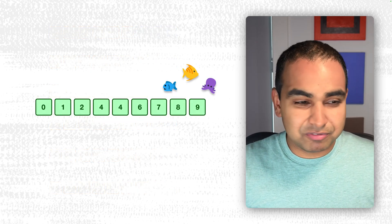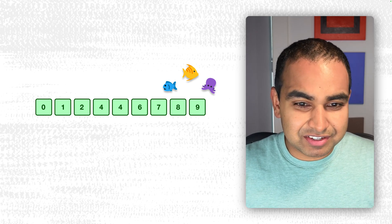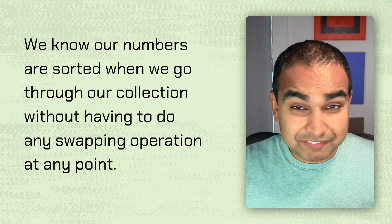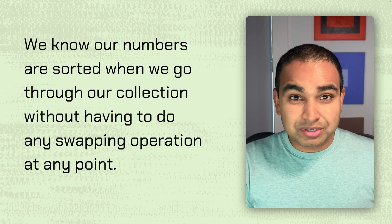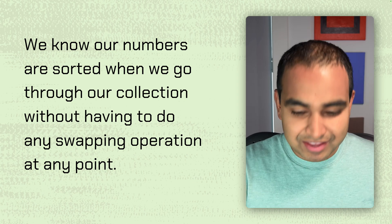In this case, with the numbers we had before, the fully sorted list would be 0, 1, 2, 4, 4, 6, 7, 8, and 9. Now, when do we know that our values are all fully sorted? We know they're sorted when we go through our collection without having to do any swapping. No swapping operation was done at any point.